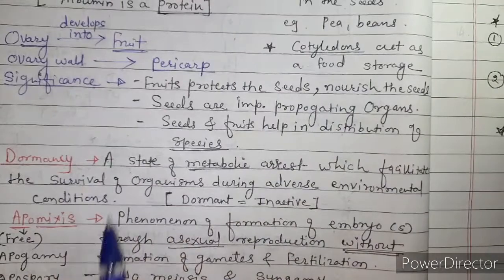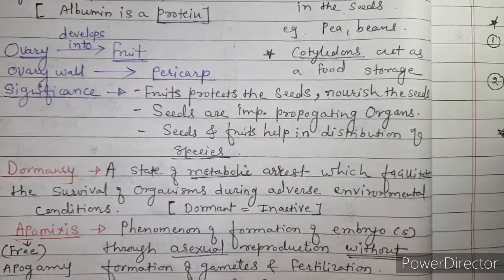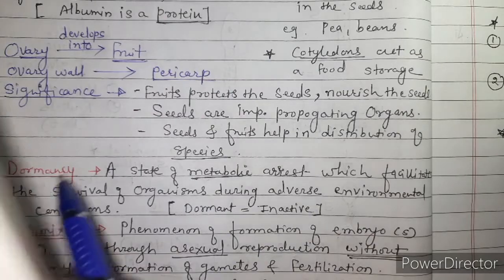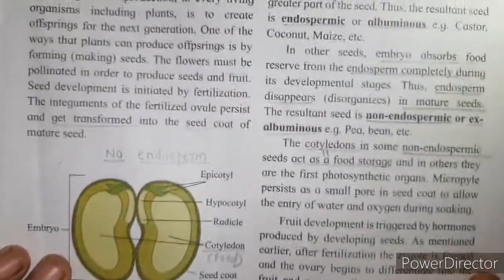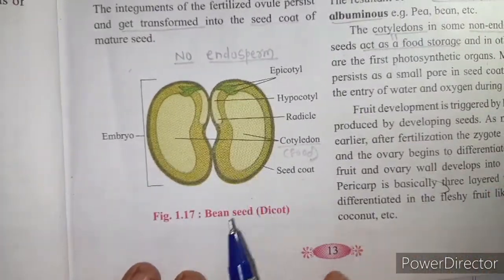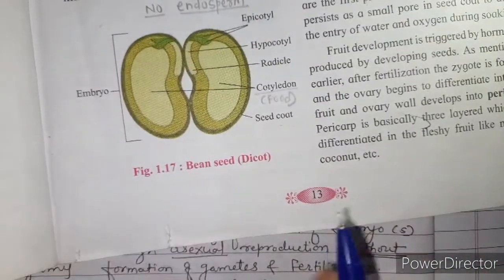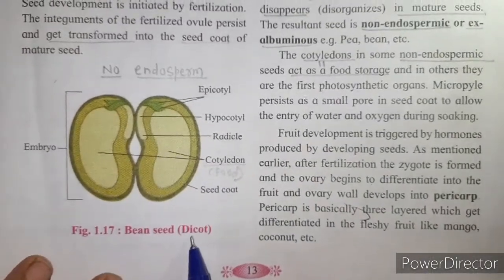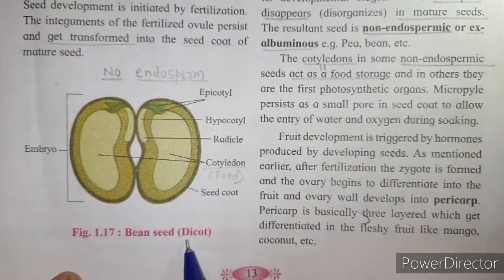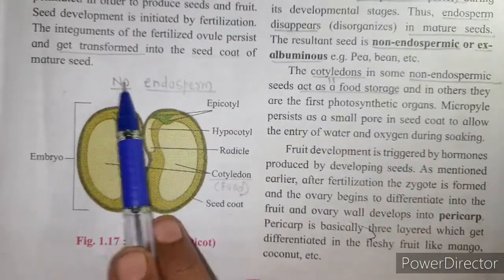About the remaining part we will see in the next period. But before that, we can draw the structures of dicot and monocot seeds from the textbook — page number 13. Here is an example of a dicot seed, which is a non-endospermic seed — there is no endosperm in it.